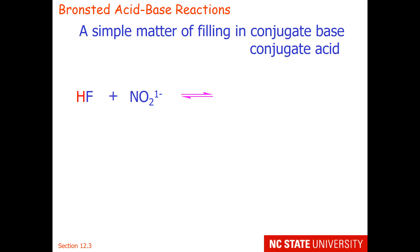For Bronsted acid-base reactions, writing the net reaction is a simple matter of filling in the conjugate base and the conjugate acid. For example, if we have hydrofluoric acid and the nitrite ion, clearly the one with the hydrogen is our acid, and clearly the nitrite ion, which doesn't have a hydrogen, is our base.